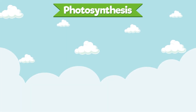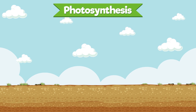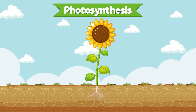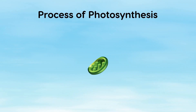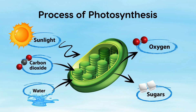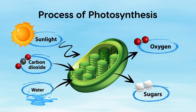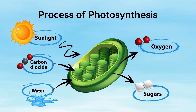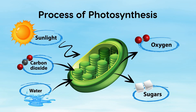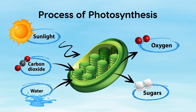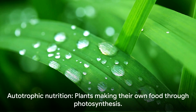Photosynthesis is a key concept in biology, a process that allows plants to make their own food. Plants are like self-sufficient chefs, cooking up their own meals. They do this by converting light energy, usually from the sun, into chemical energy in the form of glucose or food. This process is what we call autotrophic nutrition.